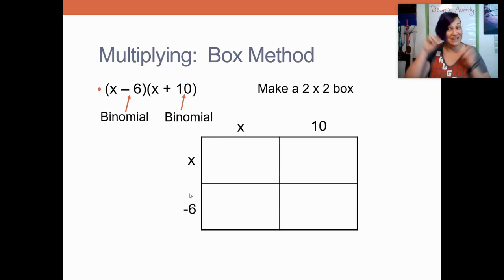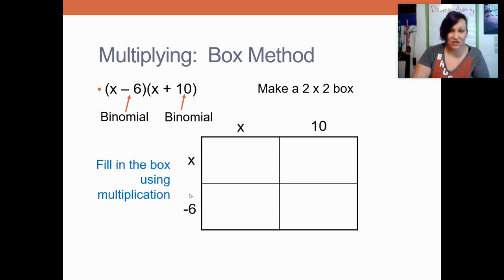When you're filling in the box, you're doing multiplication. So next to my first box is an x and above my first box is an x. So I'm going to take those two x's and multiply them to make an x squared. When you're multiplying, you do change your exponents. For the next box over, this is on my first row and my second column. So I'm going to be multiplying my x times my 10 and that'll become a 10x.